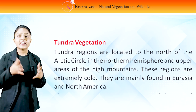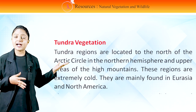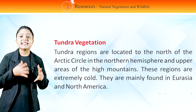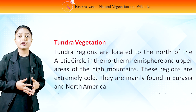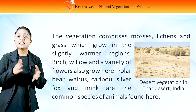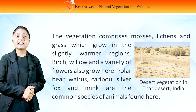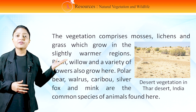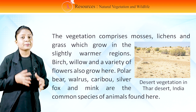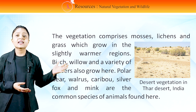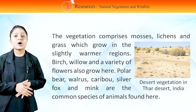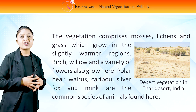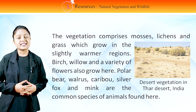Tundra regions are located to the north of the Arctic Circle in the northern hemisphere and in upper areas of high mountains. These regions are extremely cold. They are mainly found in Eurasia and North America. The vegetation comprises mosses, lichens and grass, which grow in the slightly warmer regions. Birch, willow and a variety of flowers also grow here. Polar deer, walrus, caribou, silver fox and mink are the common species of animals found here. In this picture, you can see desert vegetation in the Thar Desert, India.